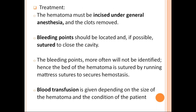Treatment: the hematoma must be incised under general anesthesia and the clots removed. Bleeding points should be located and if possible sutured to close the cavity. If bleeding points cannot be identified, the bed of the hematoma is sutured by running mattress sutures to secure hemostasis. If needed, blood transfusion is given depending on the size of the hematoma and condition of the patient.